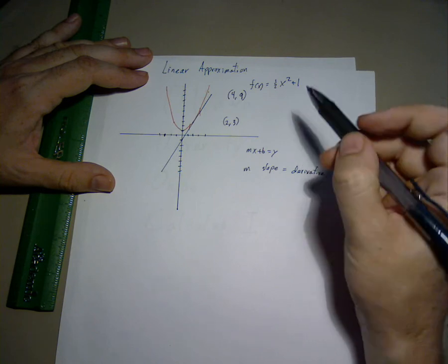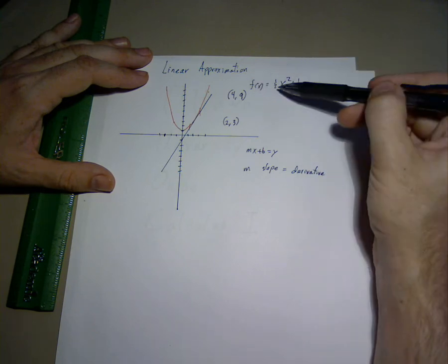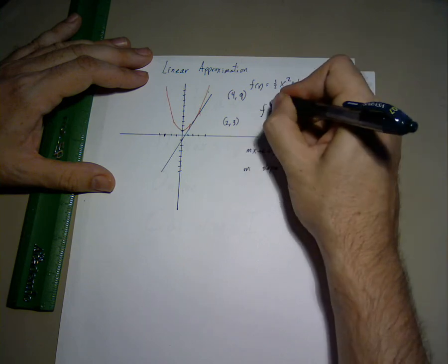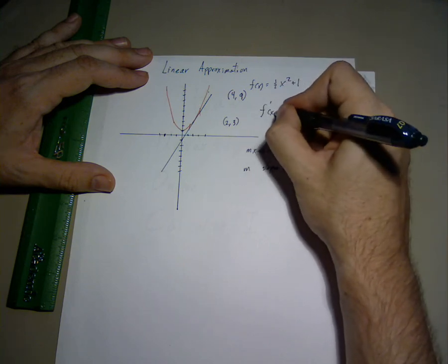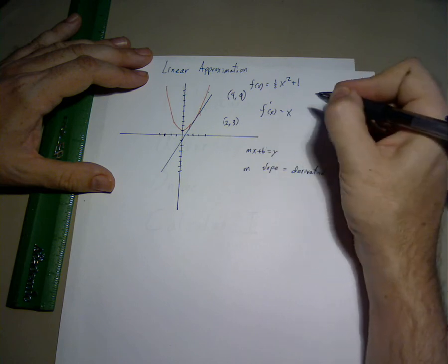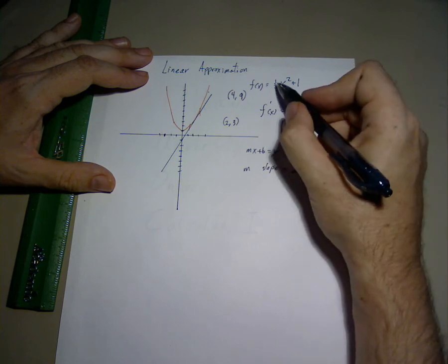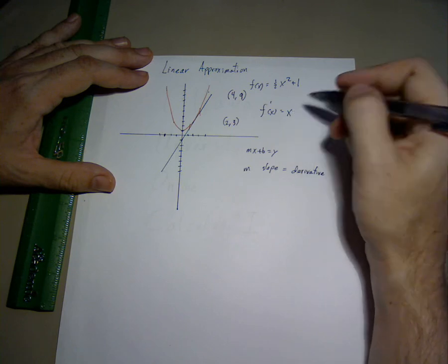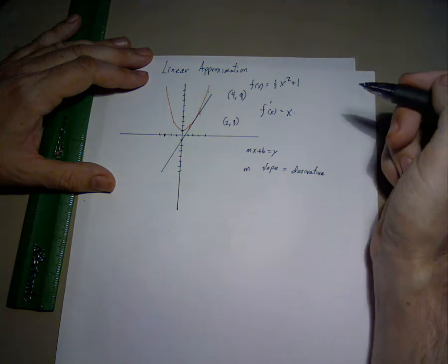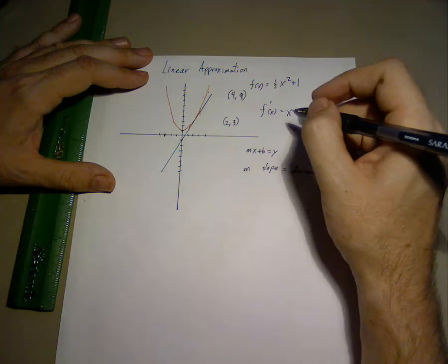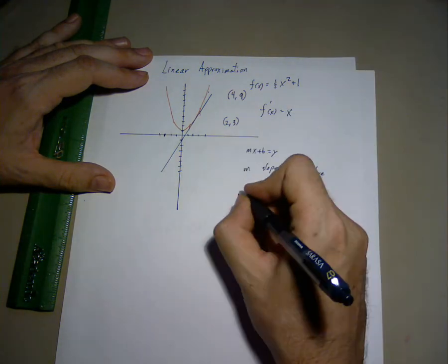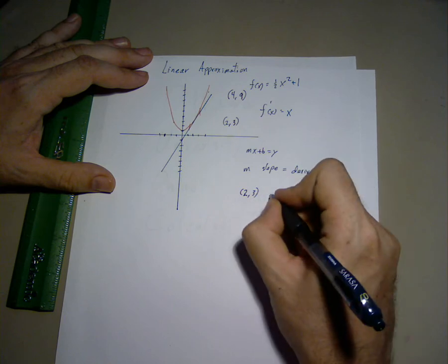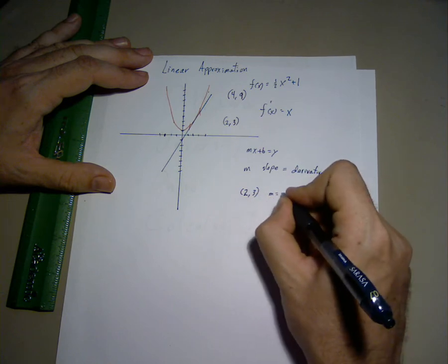The derivative of one half x squared plus one is x, because one half times 2x is equal to x. Therefore, for the point (2,3), the slope is 2.